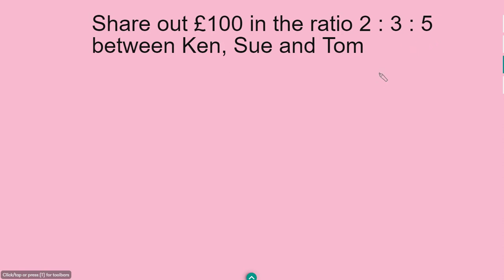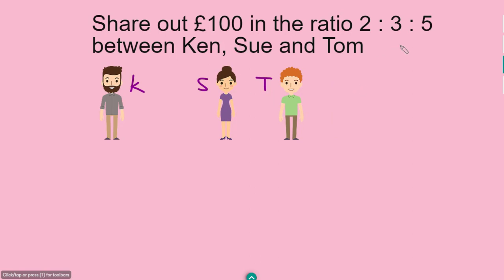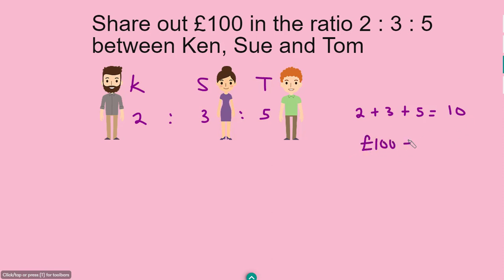We write out the three sharers: Ken, Sue, and Tom. They share 100 pounds in the ratio 2 to 3 to 5. The next step is to add up all the parts: 2 plus 3 plus 5 gives us 10 parts. We divide 100 pounds by 10, which gives us 10 pounds per part.